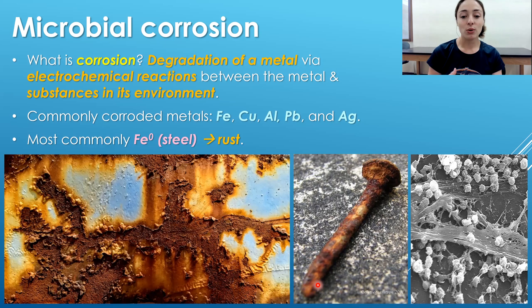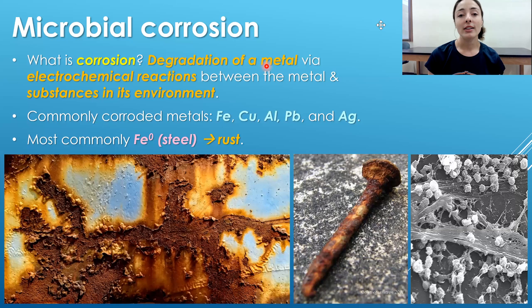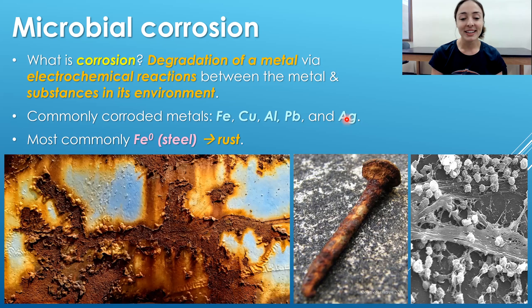Corrosion is the degradation of a metal by electrochemical reactions between the metal and substances in its environment. Commonly corroded metals include iron, copper, aluminum, lead, and silver. In this video we're focusing on the most commonly corroded or rusted material: steel, which is iron with an oxidation state of zero.